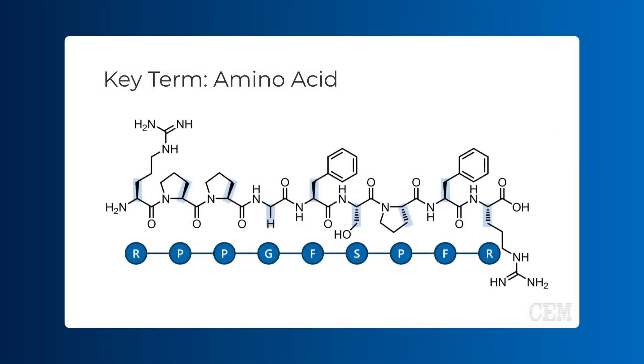Depicted here are both the chemical structure and one-letter code representations of bradykinin. Notice how the different one-letter codes represent different R groups.